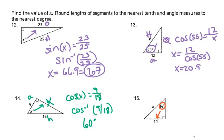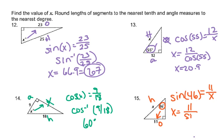Mark the angle — opposite and hypotenuse, so this is sine. Sine 46 equals opposite over hypotenuse: 11 over X. We're going to divide because X is in the denominator, so X equals 11 divided by sine 46. When we put that in our calculators, we get 15.3.